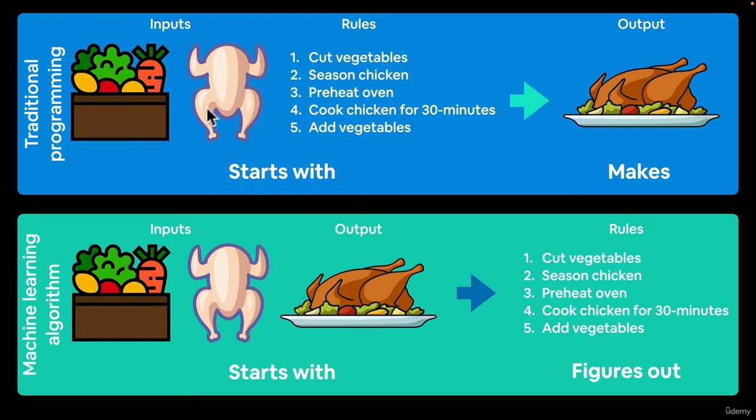which are some beautiful vegetables, a chicken that you've raised on the farm. You might write down some rules. This could be your program: cut the vegetables, season the chicken, preheat the oven, cook the chicken for 30 minutes, and add vegetables.